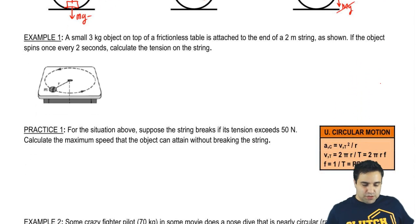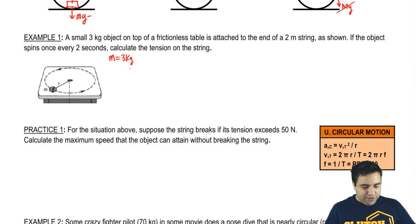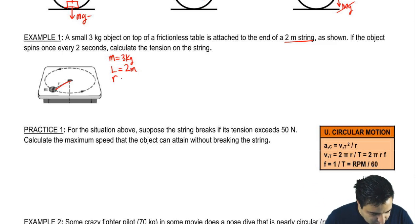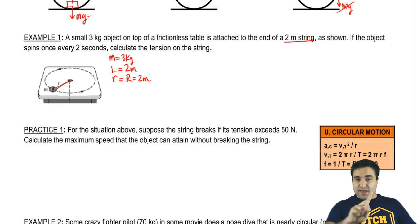Let's do a quick example here. A small 3 kilogram object on top of a frictionless table is attached to the end of a 2 meter string as shown. Now, you might remember this. If I spin on a string that has a length of 2 meters, that is the radius of my rotation, and that is the distance. So L, little r, and big R are the same thing. L is the length of the rope. R is the radius of the circle that it forms, and I'm at the edge of the radius, so that's my distance from the center. So basically, little r equals 2m.